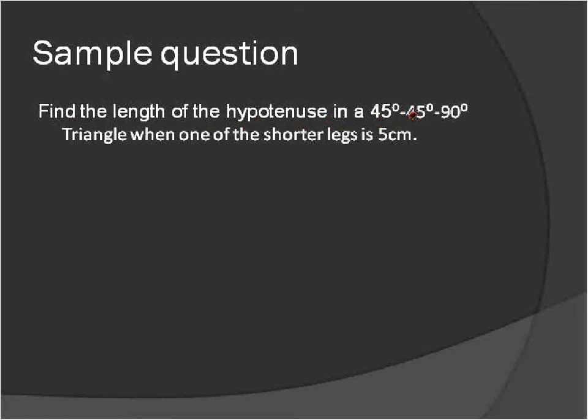Find the length of the hypotenuse in a 45-45-90 triangle when one of the shorter legs is 5 centimeters. Well, if one of the shorter legs is 5 centimeters, then the other shorter leg will also be equal to 5 centimeters because as we saw in the previous slide, the two legs are equal in length. So when we set up the Pythagorean theorem, a squared plus b squared equals c squared, we'll substitute in the value of 5 for both a and b.